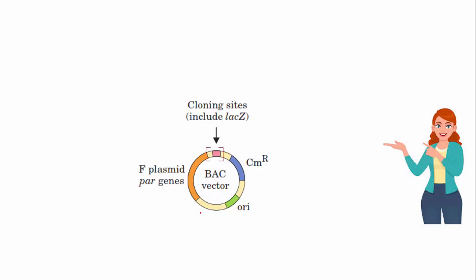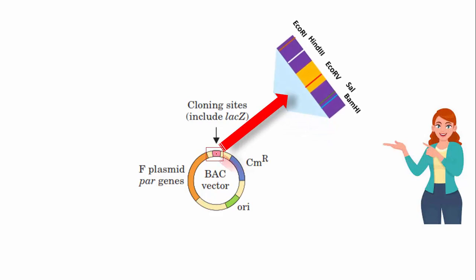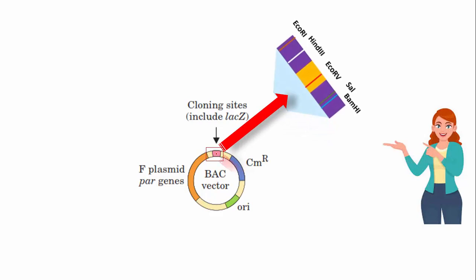Now we will see the main features of the BAC vector construct. The BAC vector contains a cloning site — the cloning site is the point where restriction enzymes come and cleave. It contains multiple cloning sites like EcoRI, HindIII, EcoRV, and BamHI.